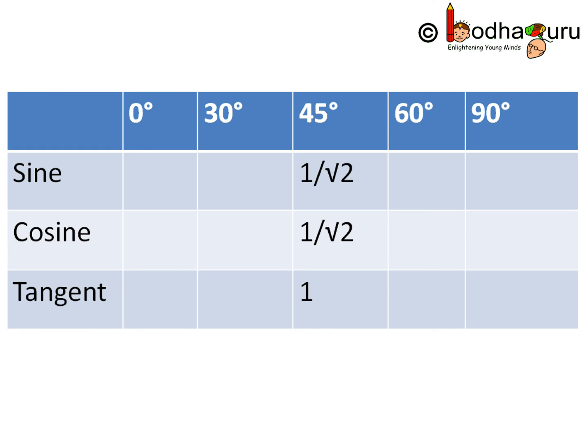So what did we see in this video? Sine of 45 degree is 1 by square root of 2, cosine of 45 degree is also 1 by square root of 2, and tan of 45 degree is equal to 1.